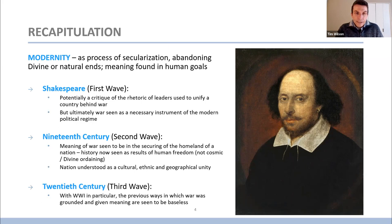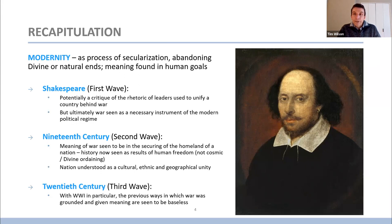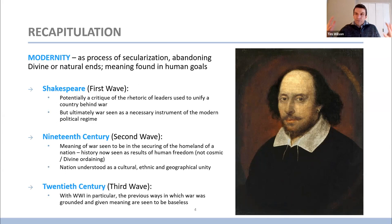In the 19th century we see the second wave of modernity. The meaning of war is in the securing of an ethnic homeland — not necessarily the regime as a political regime, but as a nation understood as a cultural and ethnic unity. It's a question of that as manifesting human freedom, not a divine ordaining necessarily. Then in the 20th century we see the third wave of modernity, and with World War One in particular, the previous ways in which war was grounded and given meaning are seen to be senseless or baseless. Doing this for a nation, for God, for glory, for piety — none of those reasons seems to make sense in the 20th century any longer.